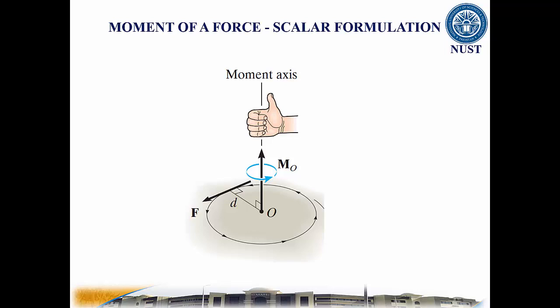The right hand rule is used to establish the sense of moment. According to this rule, the natural curve of the fingers of the right hand as they are drawn towards the palm represents the tendency for rotation caused by the moment. As this action is performed, the thumb of the right hand will give the direction sense of moment.